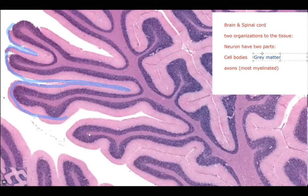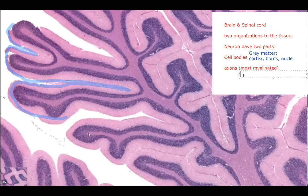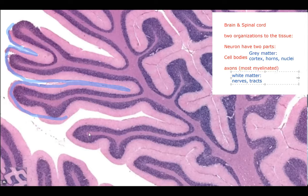Collections of cell bodies are known as gray matter. Gray matter includes our cortex, our horns, and our nuclei — all collections of cell bodies. Axons, because they're mostly myelinated by lipids and fats, form our white matter. White matter includes our nerves — bundles of axons — as well as our tracts. All nervous tissue in the brain and spinal cord has both gray matter and white matter.